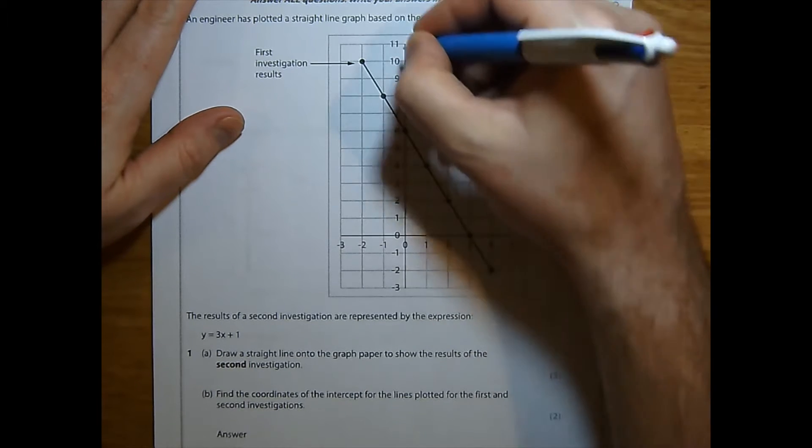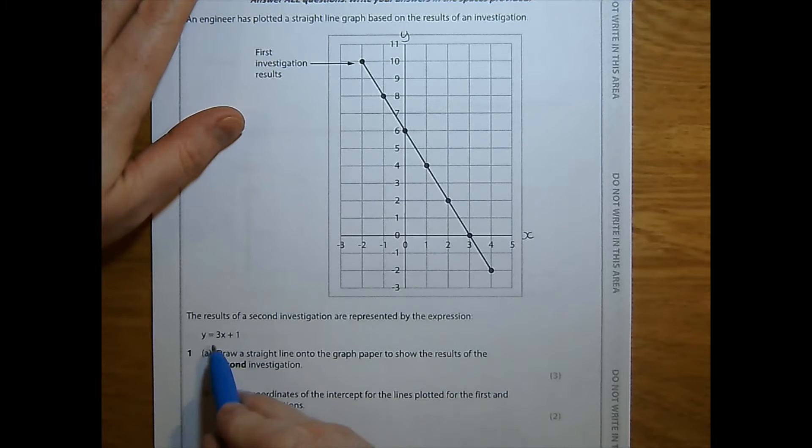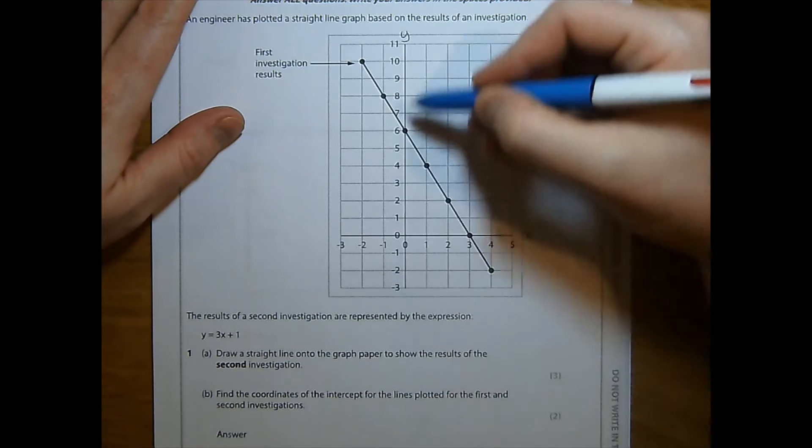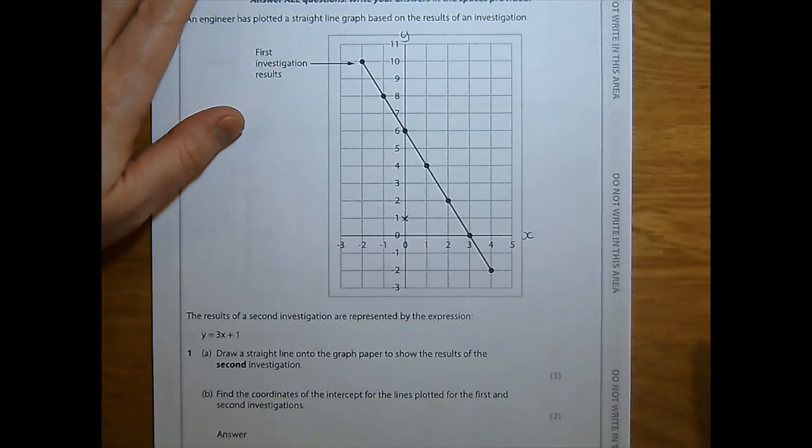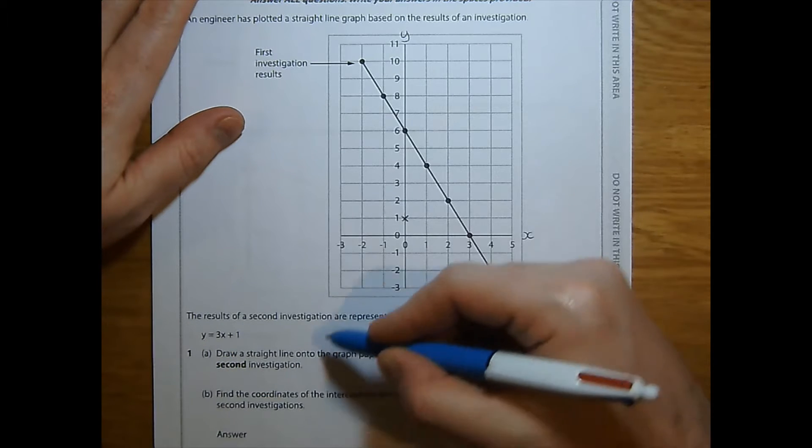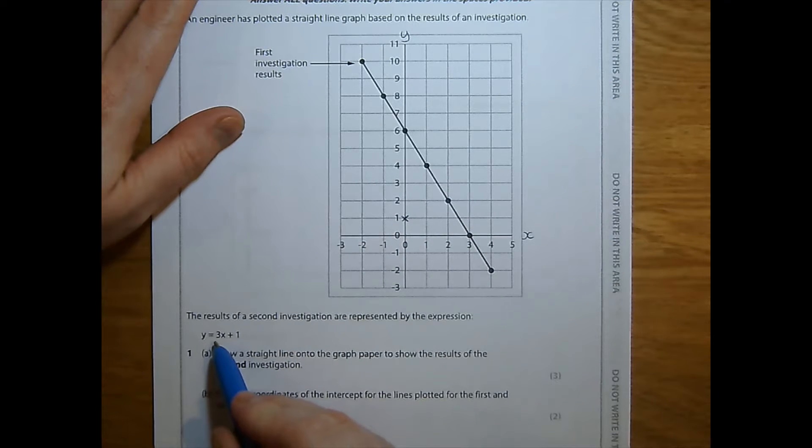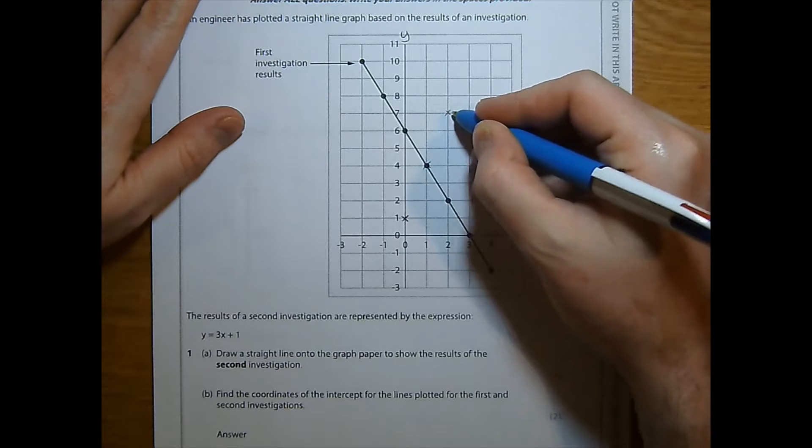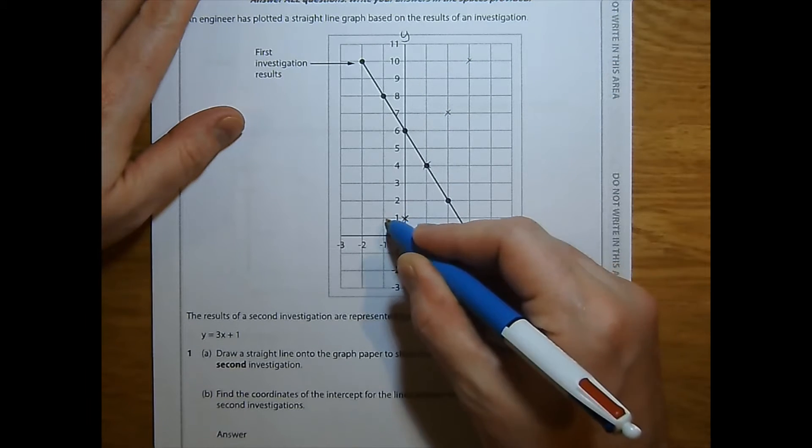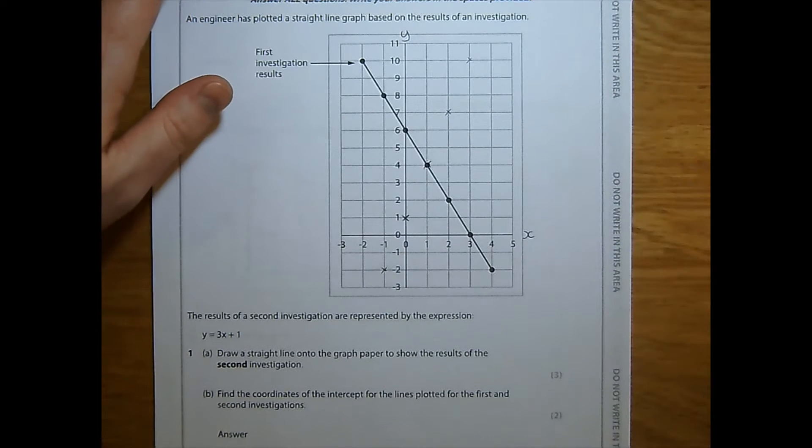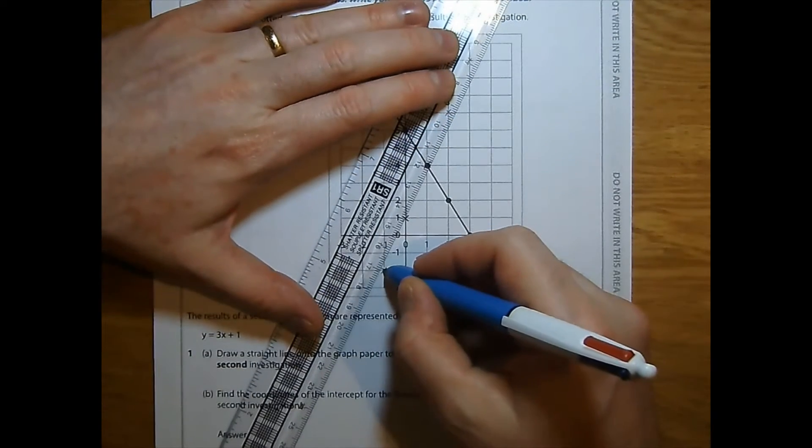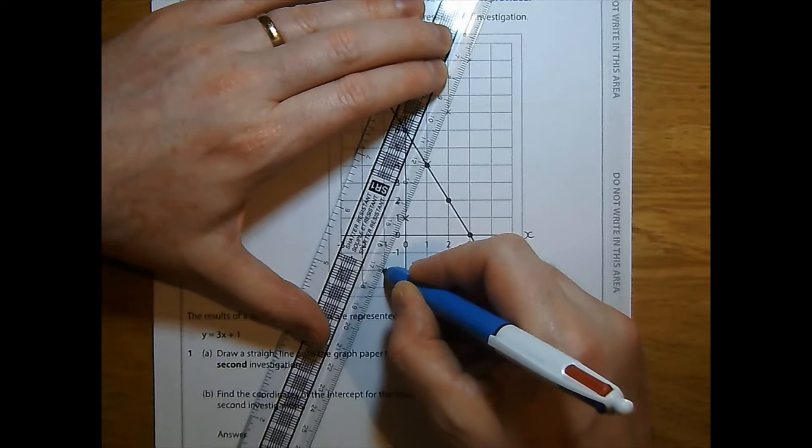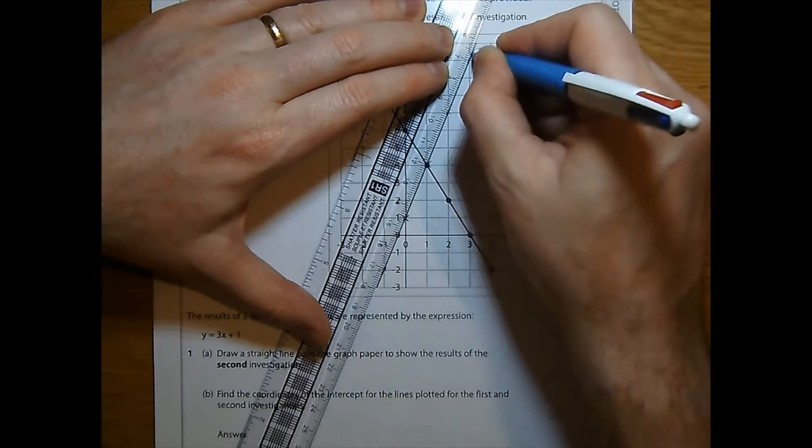Let's go ahead and label these axes. So y equals 3x plus 1. I know in the form y equals mx plus c, that the c part, in this case 1, will be our y-axis intercept. Now, m, the coefficient of x, is positive, so this is going to slope in the opposite direction. For every 1 we go across, we go up by 3. Across 1, up 3. We can continue the pattern backwards. Let's have a little look at plotting that using our ruler. I'm lined up on all those points, so I'm going to plot that line there.